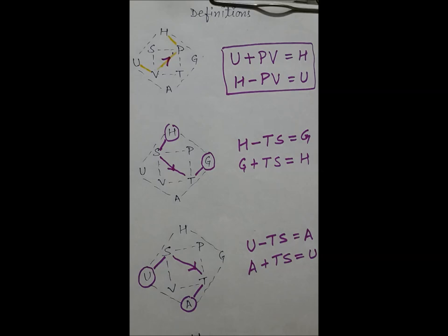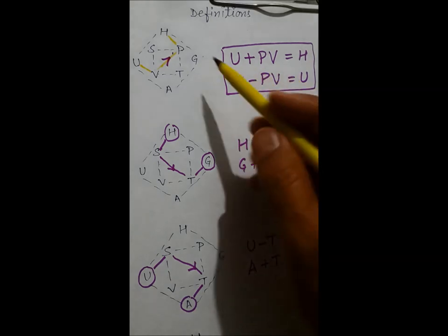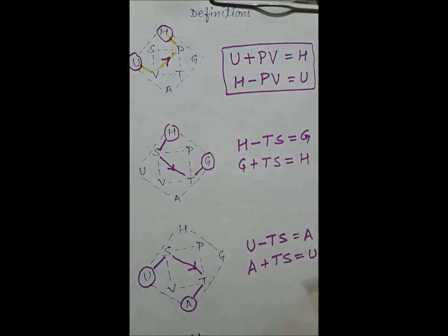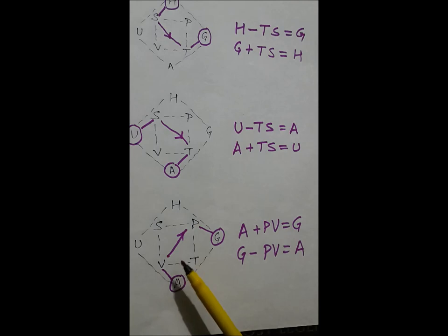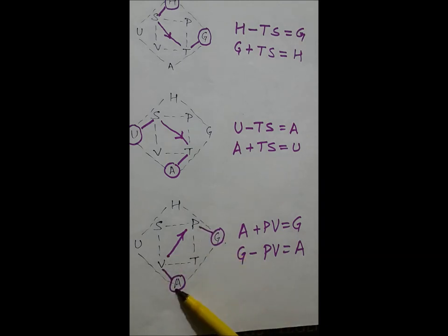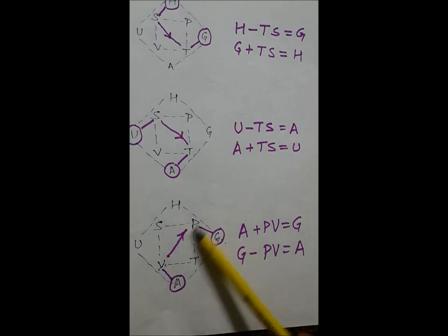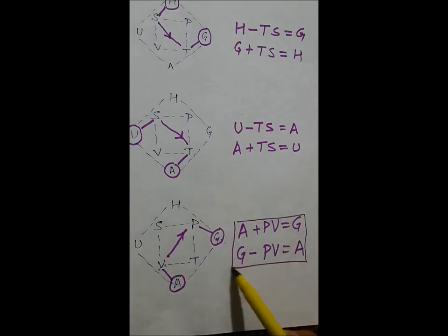Now the relation between G and A. Going from A to V to P to G, the arrow goes up, so A plus PV equals G. Going from G to A the arrow goes down, giving G minus PV equals A. So these are the definitions of thermodynamics.